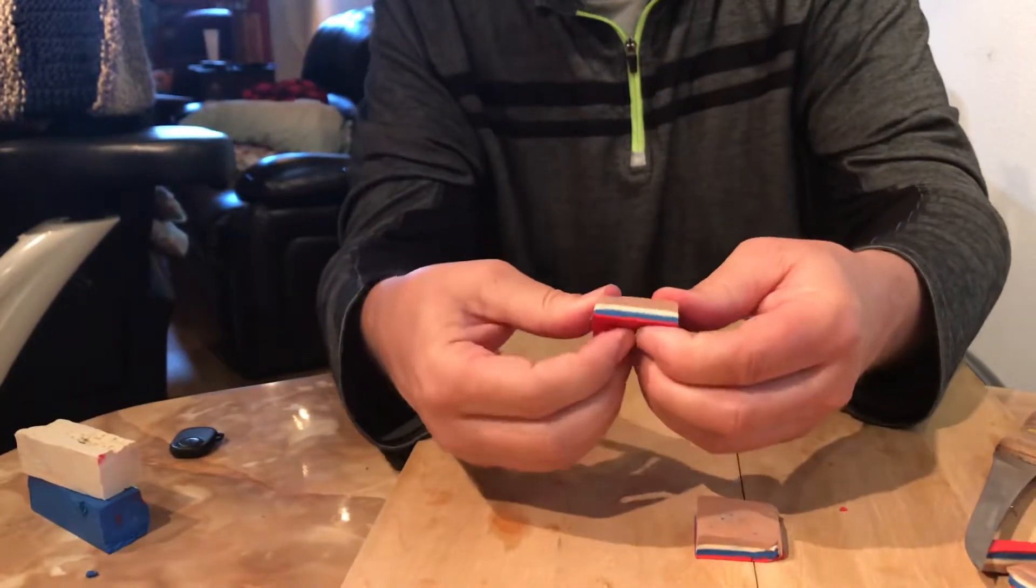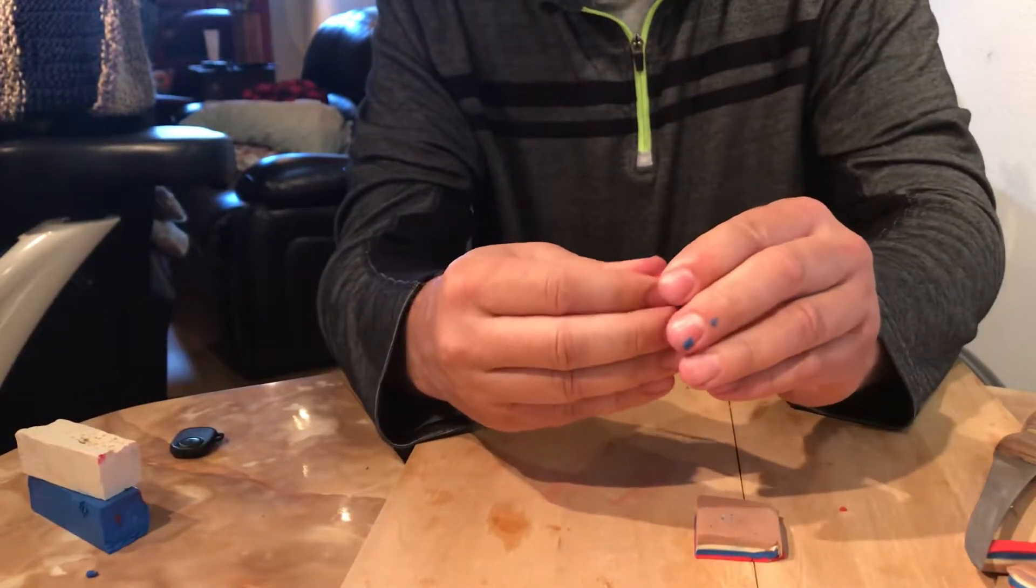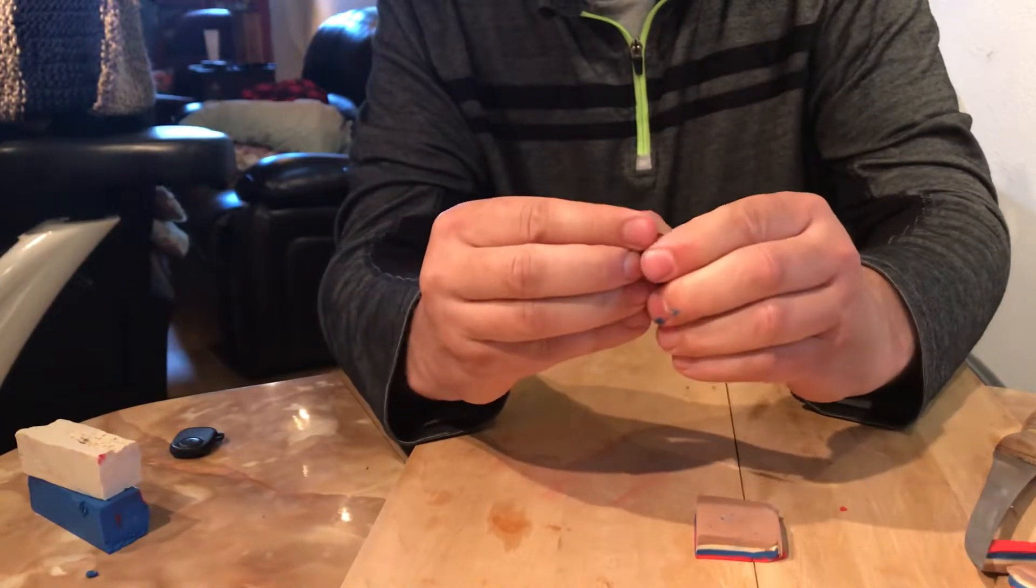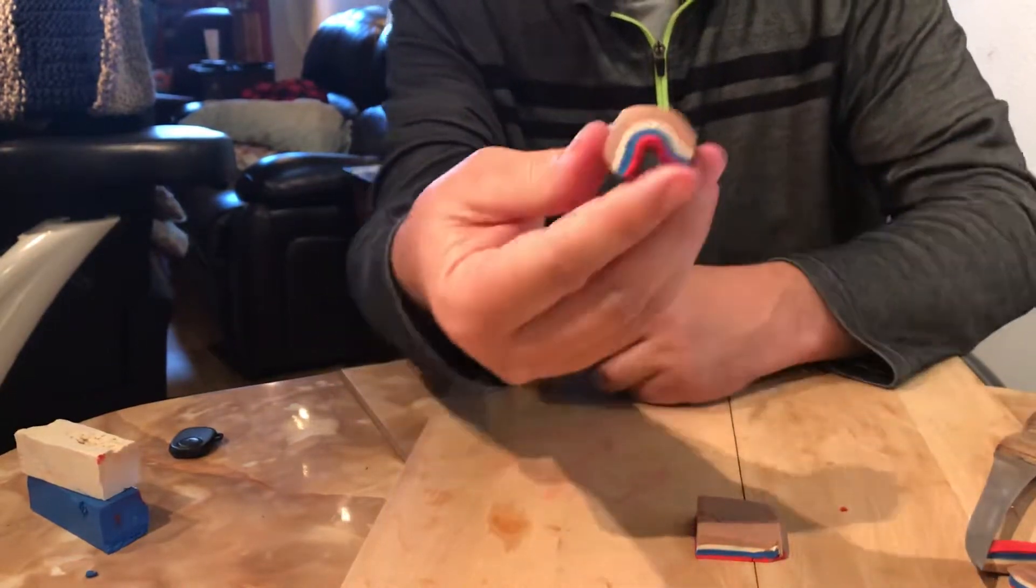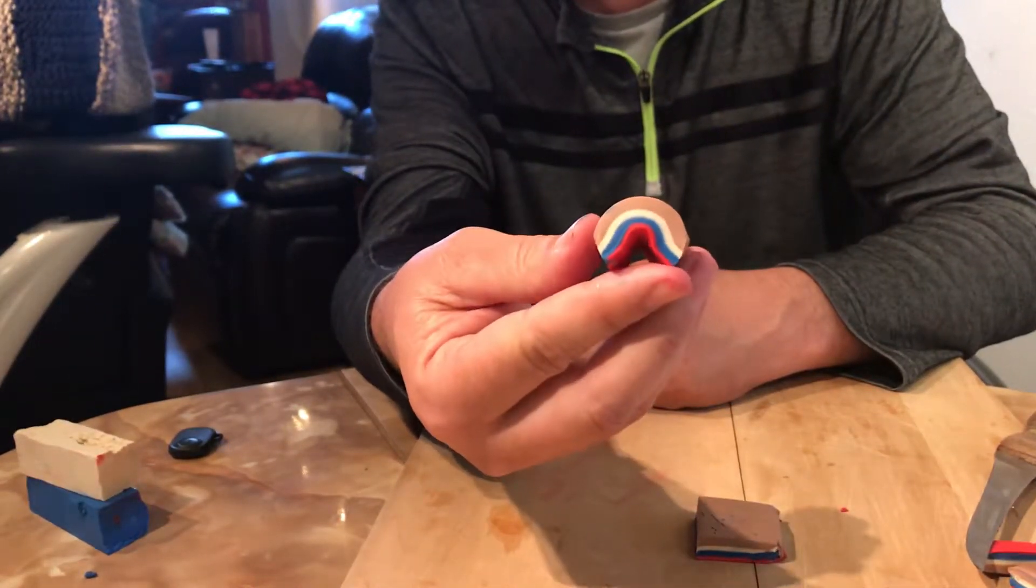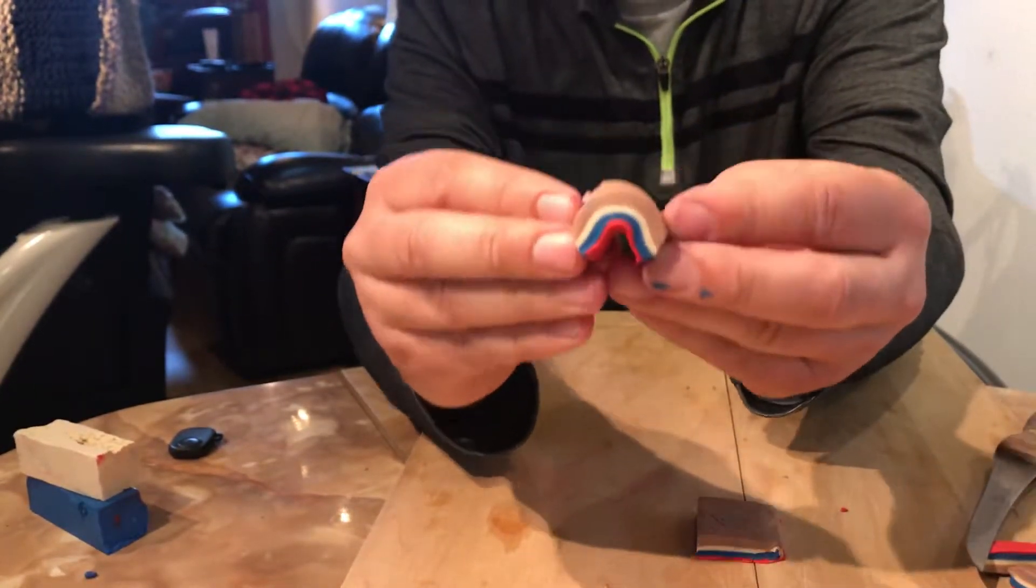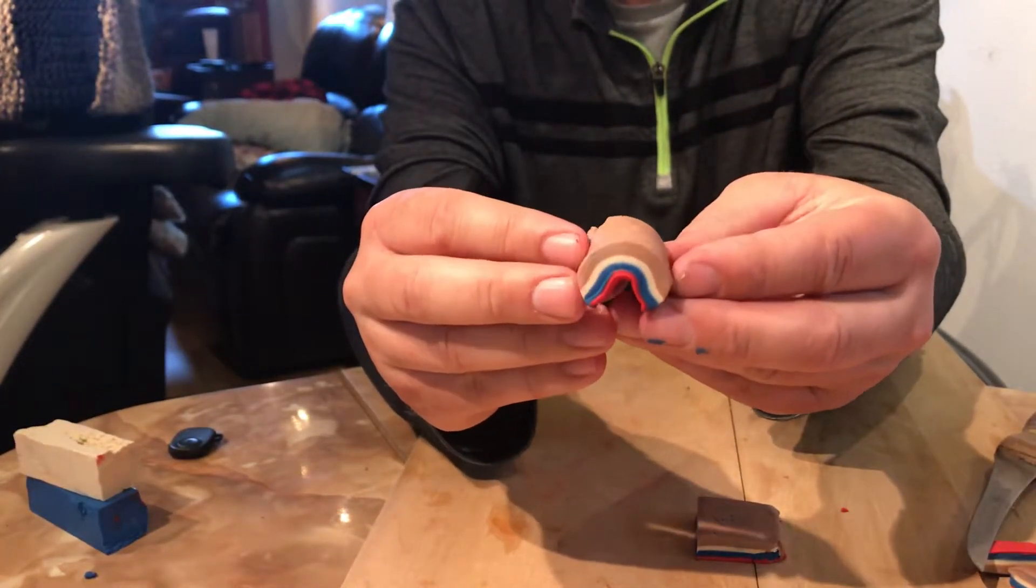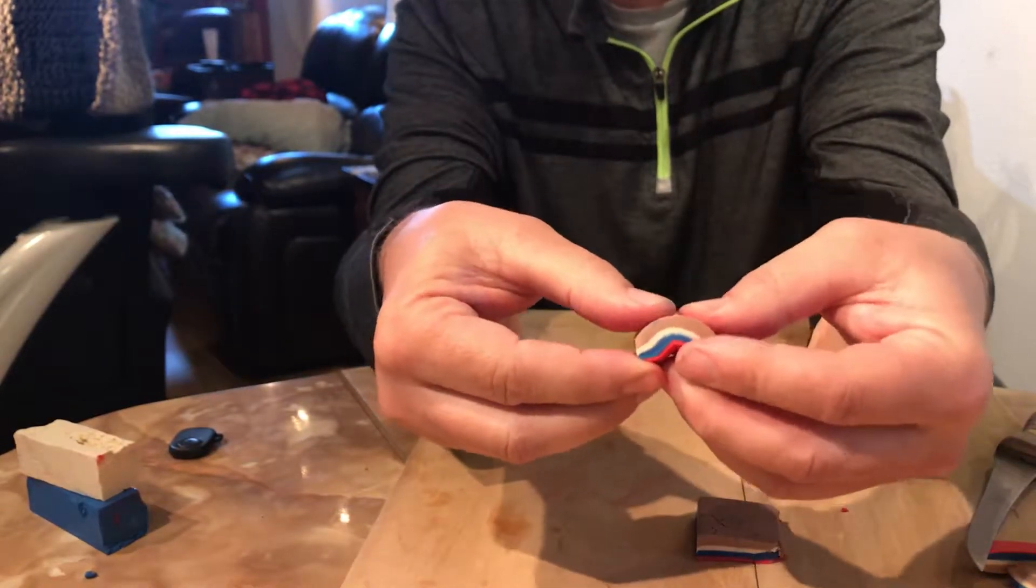In an anticline structure, the oldest bed, which is the bottom bed, is in the middle. In this case the red layer is the oldest, the brown layer is the youngest. Now a lot of times anticlines are not nice and perfectly asymmetric. A lot of times they're kind of asymmetric sort of like this.